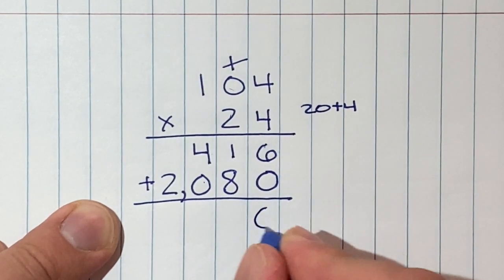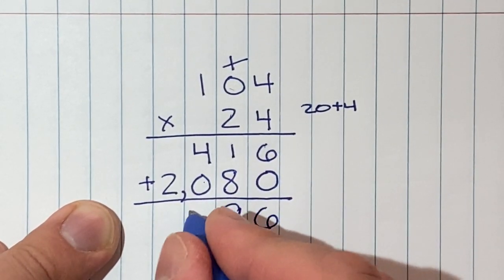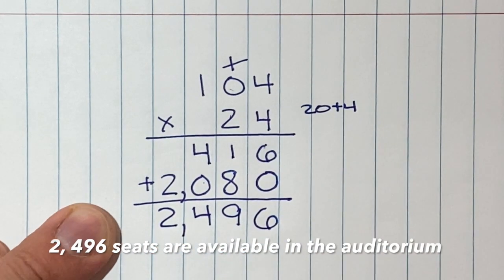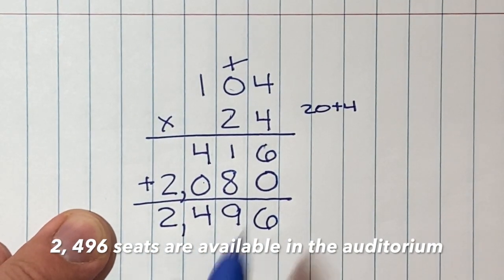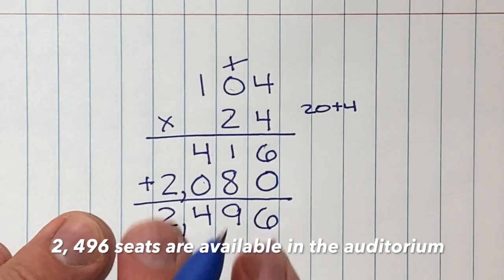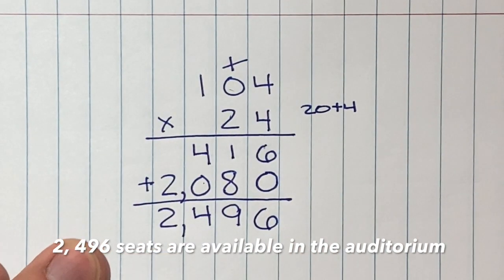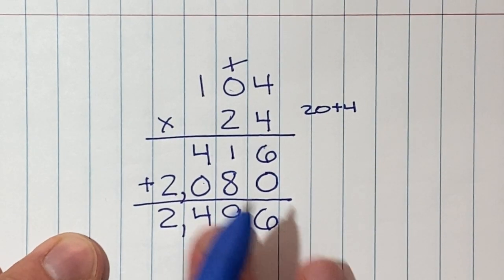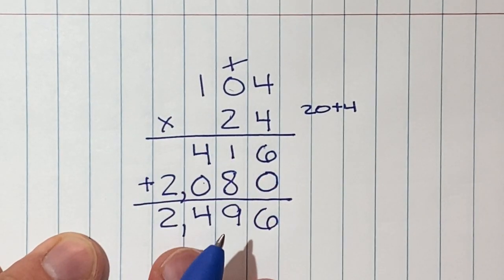So we broke it apart, now we got to put it back together again by adding, and we can quickly get our answer: 2496. You can see how nice and straight these digits are because we held our notebook sideways and everything's in nice new columns. Everything's nice and neat.